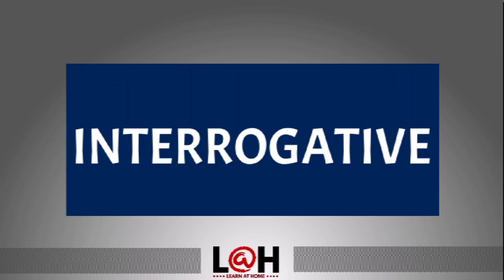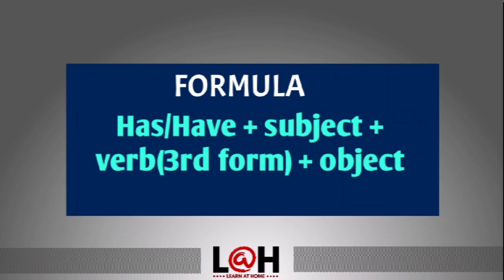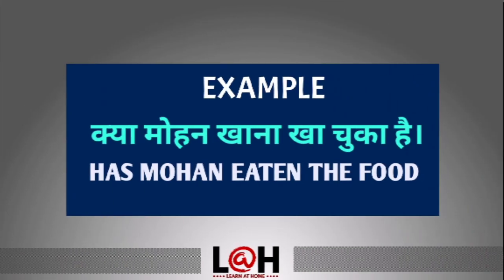Now let's talk about interrogative sentences. The formula is simple — where has/have was placed after the subject before, now it goes before the subject. Formula: has/have + subject + third form of verb + object. Example: 'क्या Mohan खाना खा चुका है?' — Has Mohan eaten the food? And if it were 'क्या हम खाना खा चुके हैं?' — Have we eaten the food? The rest of the sentence remains the same.